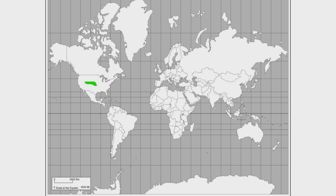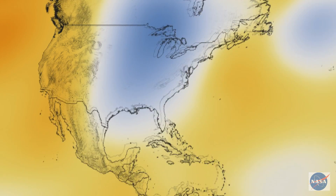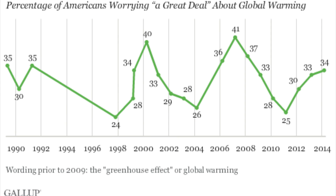Consider that the continental United States, the lower 48, makes up only about 1.6% of the earth's surface. The other 98.4% of the planet is having their own weather right now, which could be very different from ours. Opinion polling for years has shown that Americans' awareness and concern about climate change rise and fall based on how hot it is during our summers and how cold our winters are. We realize in climate science that these extreme and local events are actually symptoms of climate change and not the negation of it.